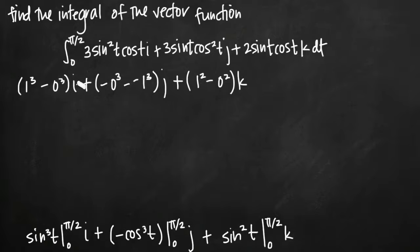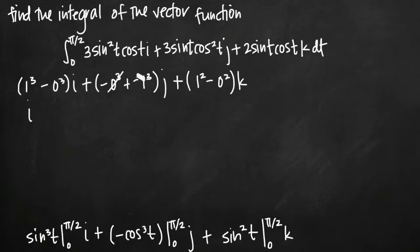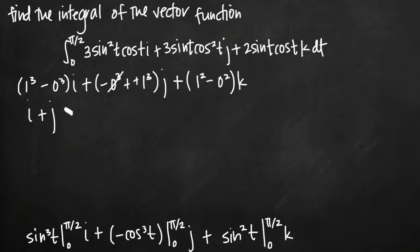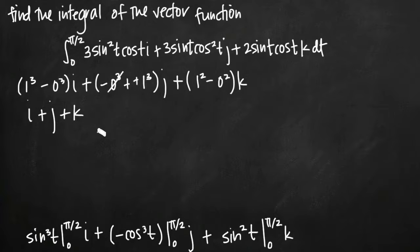When we simplify, we get 1 times i is just i. For j, 1 minus negative 1 gives plus j. And for k we get plus k. Once we reach this point, we've simplified as much as we can. Our final answer is i plus j plus k, and that's how you find the integral of a vector function.